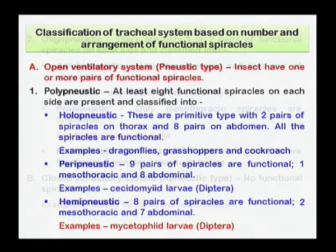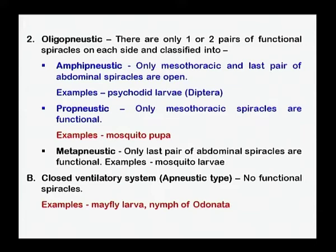The second category is oligopneustic, in which only one or two pairs of spiracles are functional. This is further divided into ampupneustic, where only the mesothoracic and the last pair of abdominal spiracles are open — with the mosquito pupa as a good example. A separate category is apneustic, meaning no functional spiracles are present — all ten spiracles are closed — which is common in mayfly larvae or nymphs of Odonata.